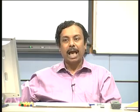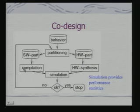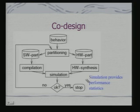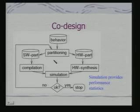We shall look at both approaches in today's class. Effectively, we have the behavior, the task graph; we partition and get a software part and hardware part. We do compilation, do hardware synthesis, then simulate the two together — that simulation provides performance statistics. If the performance constraint is met, we accept the design; else we go back, try alternate partitioning, alternate architecture, and repeat. This process can be done manually or in an automated fashion provided we have enough statistics and computer-aided tools to estimate performance.